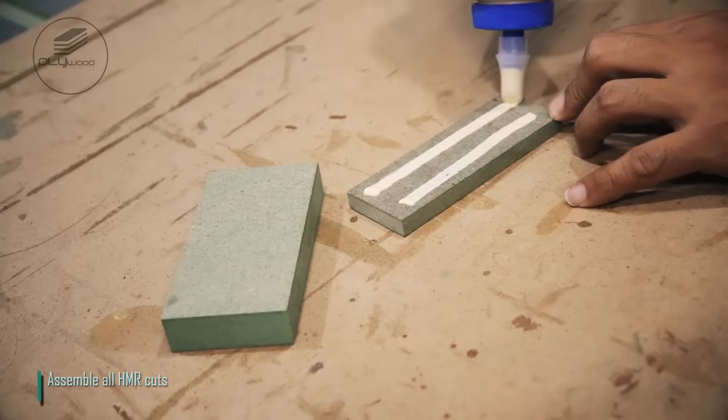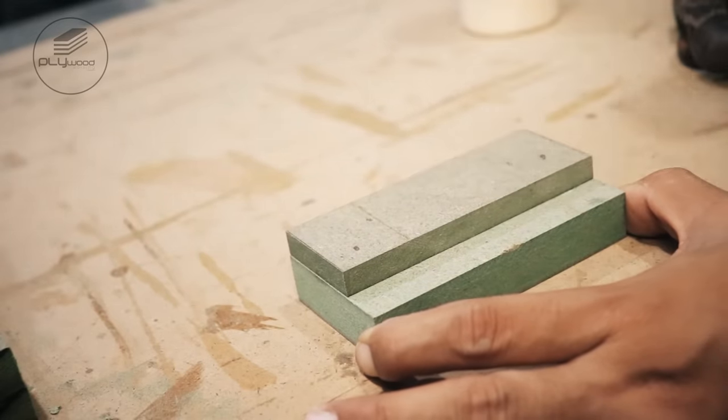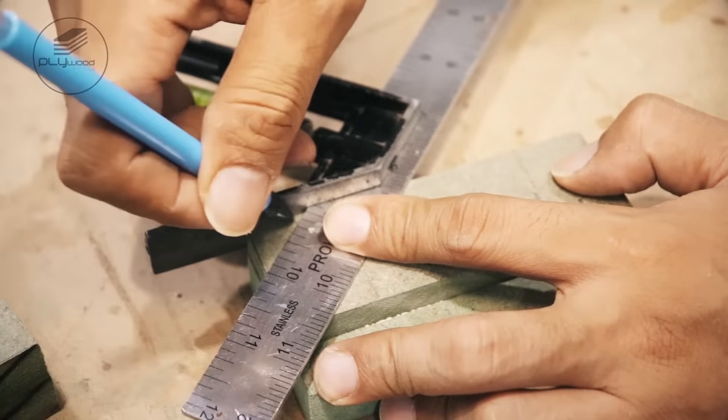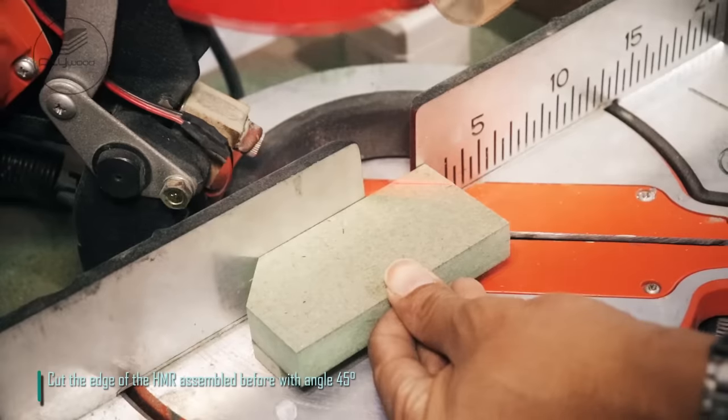Assemble all HMR cuts. Cut the edge of the HMR assembled before with angle 45 degrees.